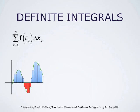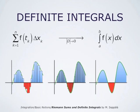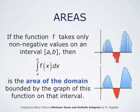These rectangles and their areas clearly depend on the various choices — that is, the choice of the points tk and the choice of the decomposing points. But as this decomposition gets finer and finer, this dependence gets less and less important, and at the limit we get something that does not anymore depend on the various choices, and that limit is the integral from A to B of f of x dx. If the function f takes only non-negative values on the interval from A to B, then the integral is the area of the domain bounded by the graph of this function on that interval. If the function takes also negative values, then the integral from A to B is the difference between the areas of the blue domains and the red domain.